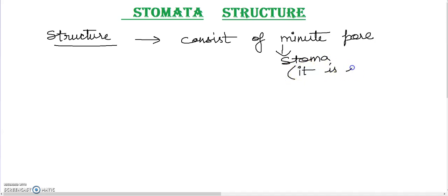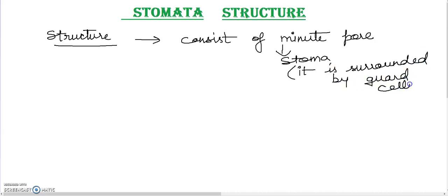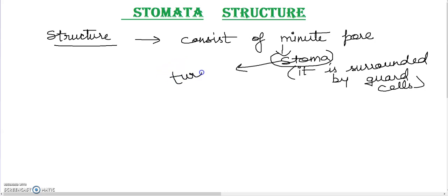Stomata is surrounded by guard cells. Now, what should you think of stomata function? I am going to tell you about the role of stomata. You can focus on the point that they are acting as a turgor-operated valve. This is called turgor pressure — a turgor-operated valve.